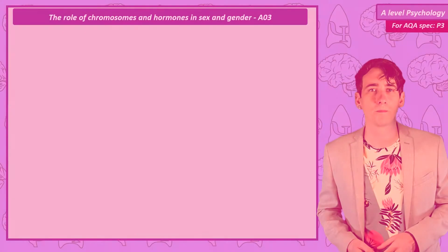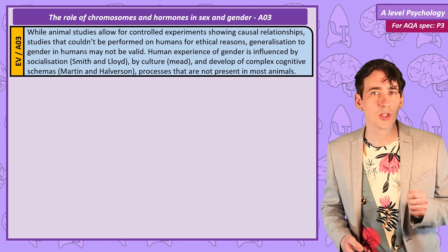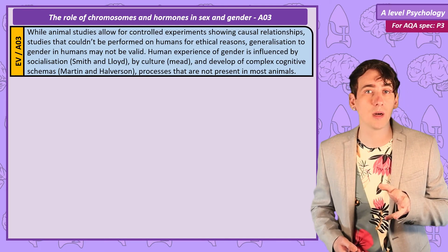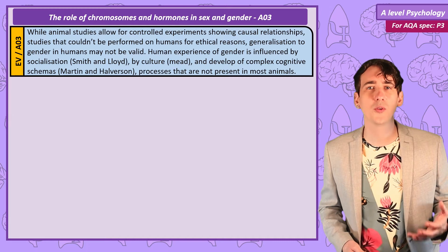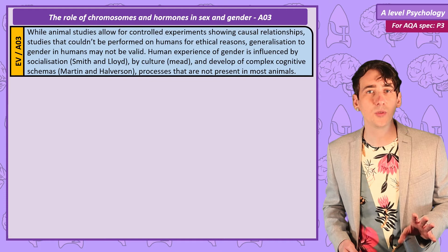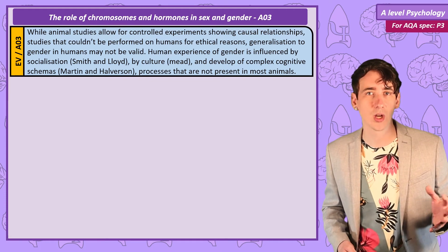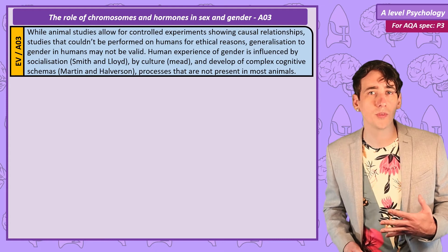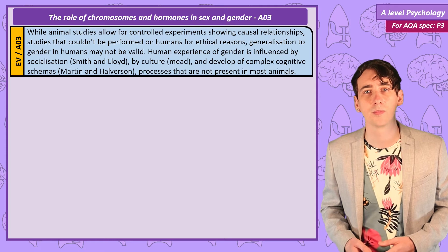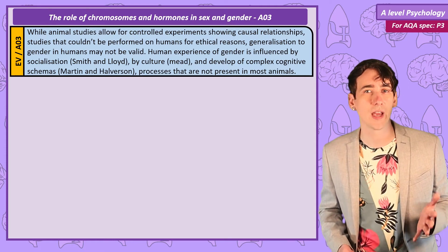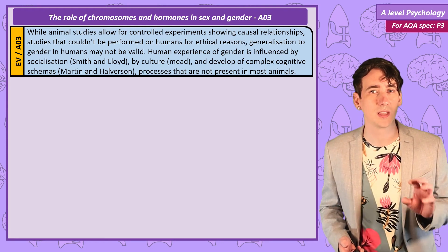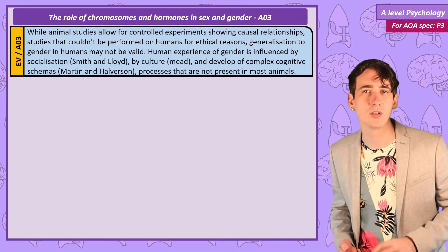Those animal studies seem to show a clear cause and effect relationship between gendered behaviour and hormone levels in experiments that we could never conduct in humans. But of course there is a big question about whether we can actually generalise those findings to humans. As we will see over the next few videos, gender in humans is influenced by socialisation from parents, by wider cultural norms and our cognitive ability to develop complex schemas to understand the world. Perhaps some animals like primates share some of those factors, but most animals don't, so it is likely not valid to say what we see in animal studies automatically applies to gender in humans.